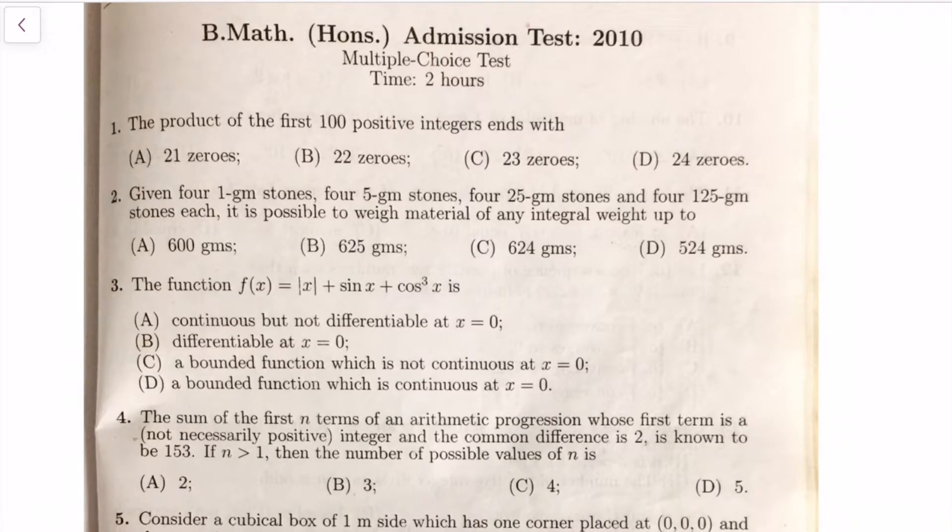Hello, so the plan is to work with some of the problems from ISI's BMath and BSTAT entrance. We start with 2010's objective paper and let's start straight away with the first problem, number one: the product of first hundred positive integers ends with how many zeros?